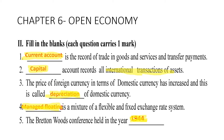Chapter six: open economy. First: the current account is the record of trade in goods, services, and transfer payments — whenever you see these three terms together, the answer is current account.